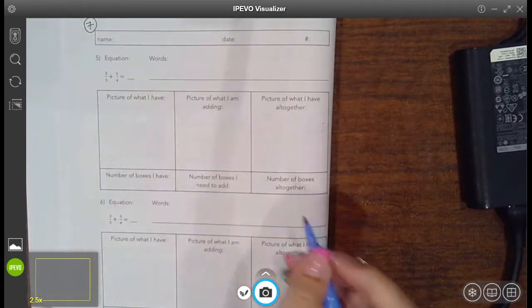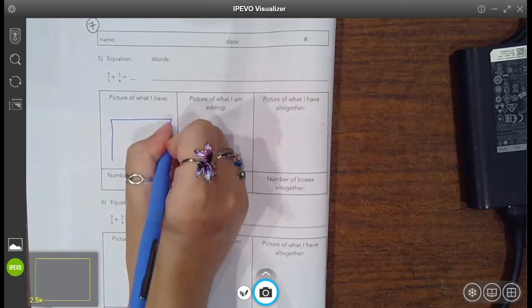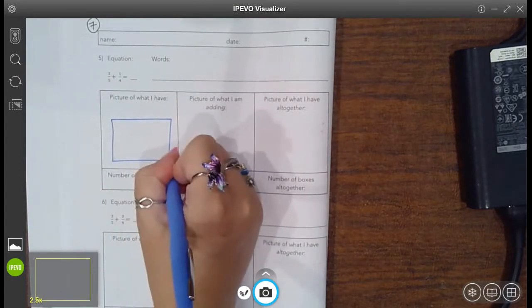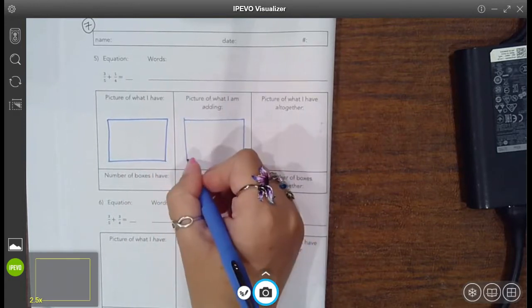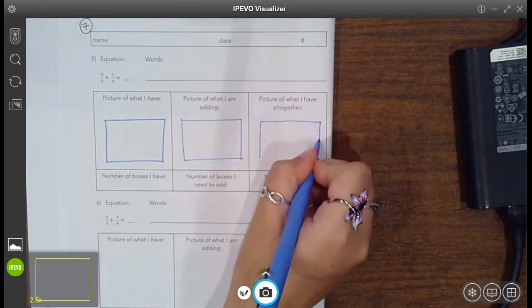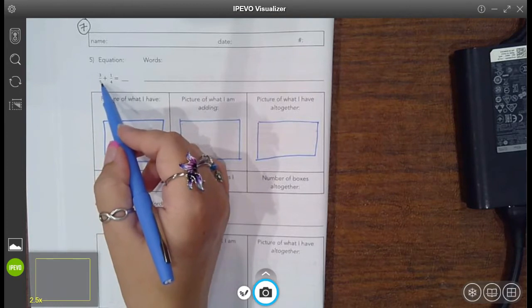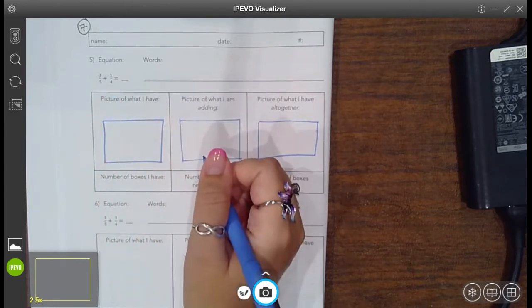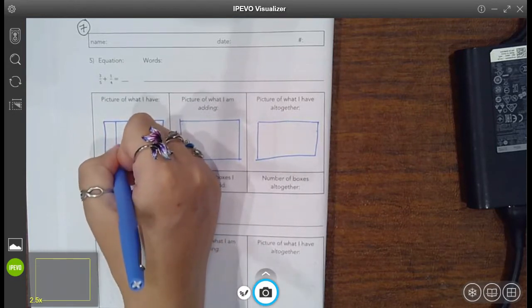Okay, so first off, we're going to do it with area boxes. So go ahead and draw a rectangle in each of these. And then I want you to think that you have to break it up into equal pieces.